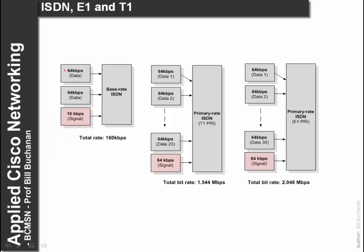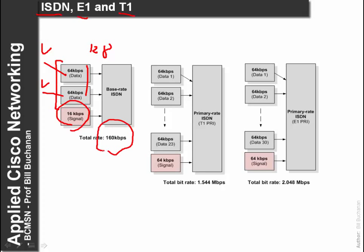Previous voice transmissions have been built around ISDN, E1 and T1. ISDN gives us our base rate times 2, where we can have two 64 kilobits per second data streams. Both or one of them could be voice, or both can be data. There is also a 16 kilobits per second signalling rate, giving us a base of 128 kilobits per second. Overall, the transmission rate for ISDN is 160 kilobits per second.